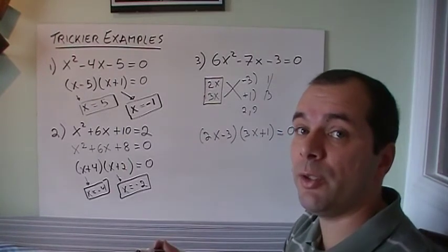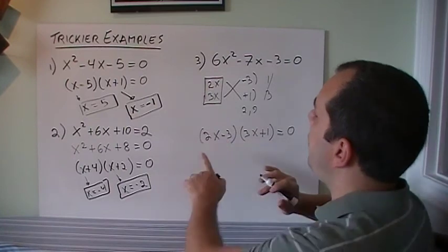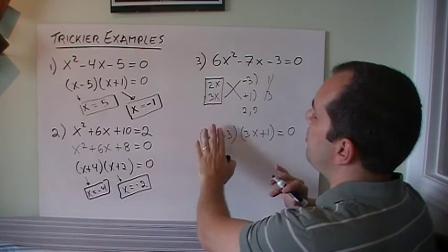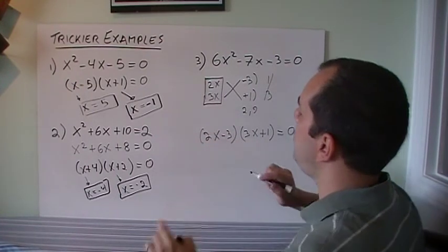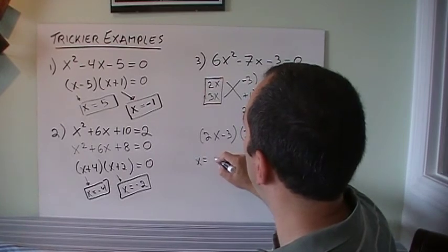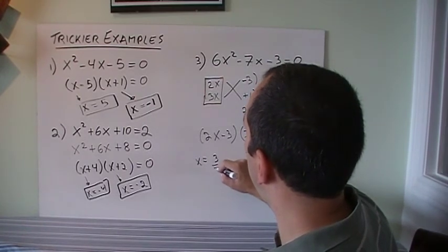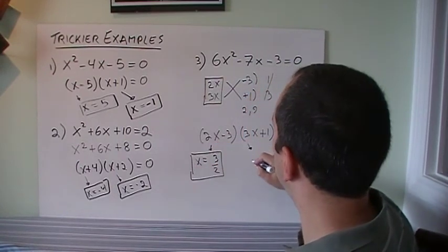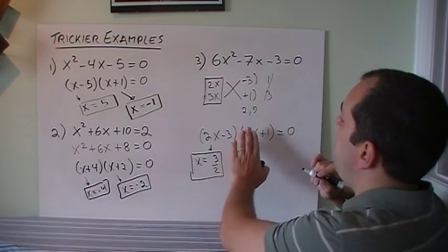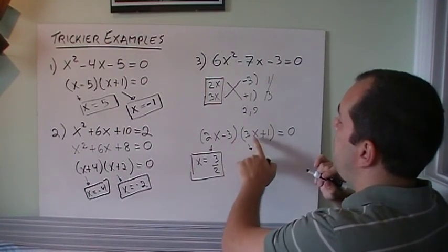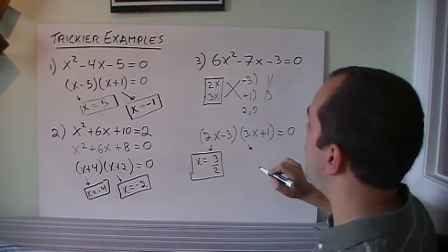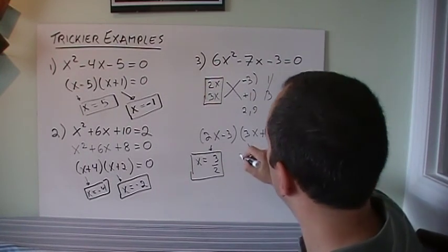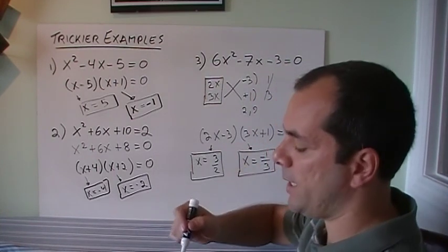Now I can do that thing I was telling you on the previous board. I want this number to go to plus 3, because that's minus 3. But if it's plus 3, I need to get rid of that 2. So therefore, x here would equal plus 3 divided by 2. That's my answer. And in this case, I want that number to be minus 1. So if that's minus 1, I need to get rid of that 3, so it's going to be minus 1 over 3. And that's my solution.